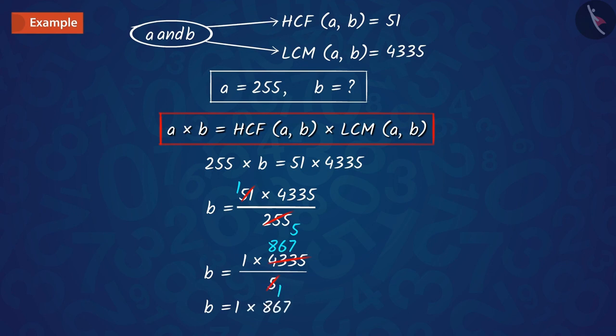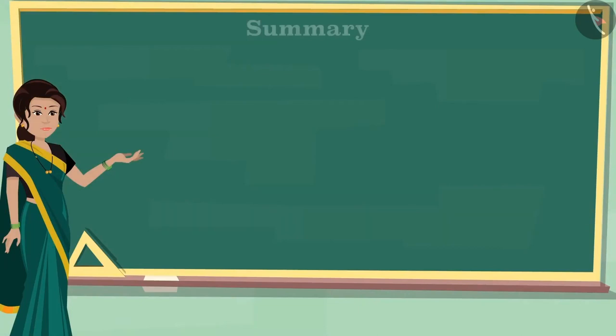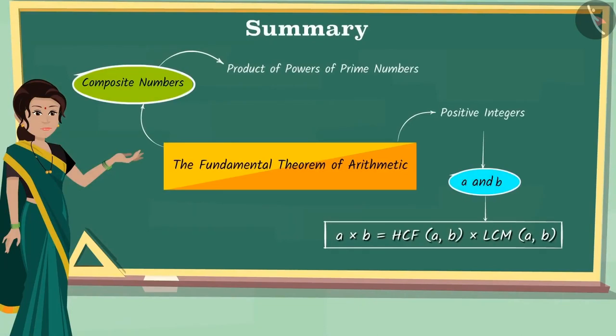Hence, the value of B will be 867. In this video, we have seen examples based on the fundamental theorem of arithmetic and observed the relationship between two positive integers and their HCF and LCM. Hopefully, you have understood the fundamental theorem of arithmetic and its use.